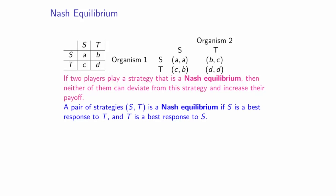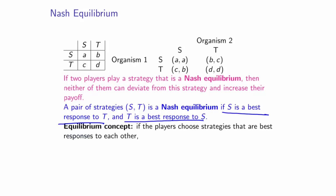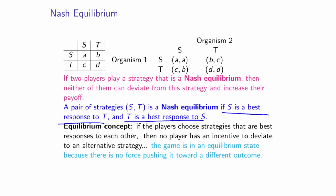Another way of phrasing Nash Equilibrium is by referring to a pair of strategies, say S and T. We say the pair is a Nash Equilibrium if S is the best response to T and T is the best response to S. So if players choose strategies that are best responses to each other, then no player has an incentive to deviate to an alternative strategy, and the game is in an equilibrium state because there is no force pushing the game towards a different outcome.